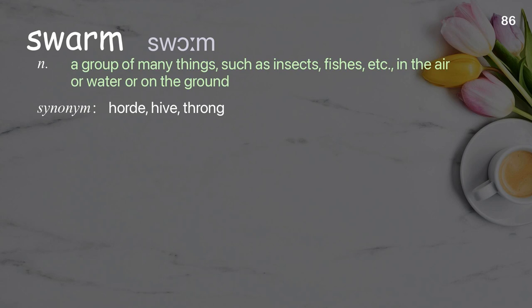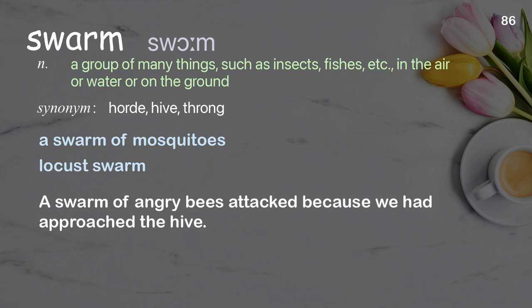Swarm: a group of many things such as insects, fish, etc., in the air, water, or on the ground. Examples: a swarm of mosquitoes, locust swarm. A swarm of angry bees attacked because we had approached the hive.